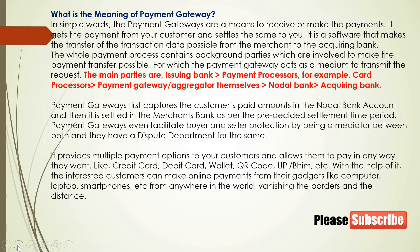From the merchant to the acquiring bank, the whole payment process contains background parties involved to make the payment transfer possible. The payment gateway acts as a medium to transmit the request. The main parties are: issuing bank, payment processor (card processor), payment gateway, node bank, and acquiring bank. The payment gateway first captures the customer's paid amount in the node bank account, then it is settled in the merchant's bank as per the pre-decided settlement time period.